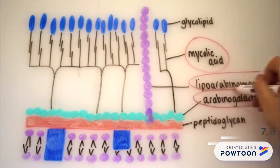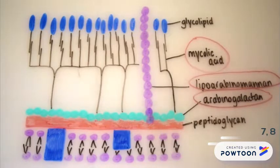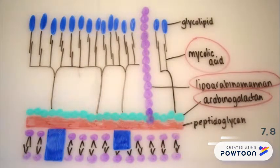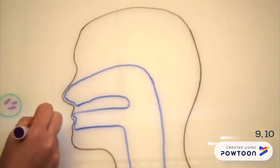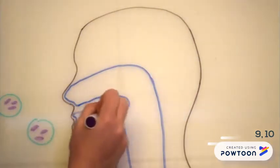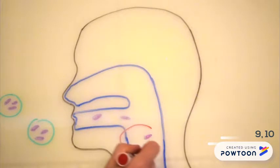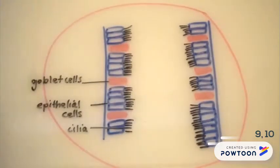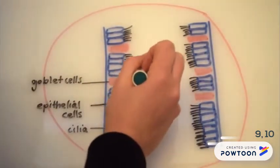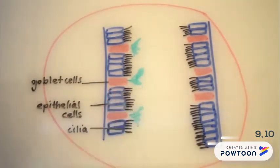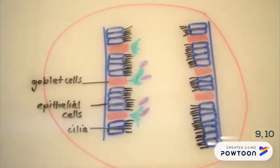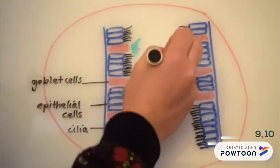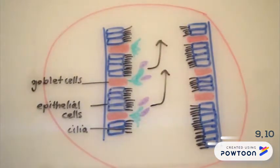Lipoarabinomannan, an antigen component of the cell wall, facilitates the survival of the bacteria within macrophages. TB is often spread through droplets, which can be coughed up to infect other people. Once inhaled, infectious droplets settle in the respiratory system. The majority of bacilli are trapped in the mucus of the upper airways produced by goblet cells, and the cilia of epithelial cells beat the mucus and entrapped particles upward for removal.